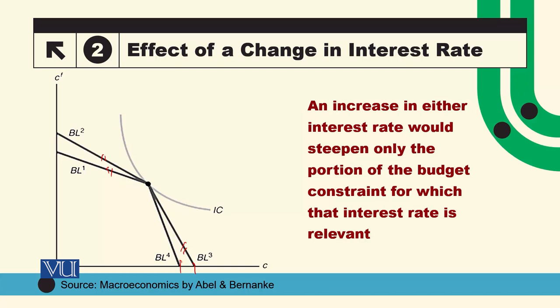دوسرا ہم یہ دیکھنا چاہتے ہیں کہ ان میں سے کوئی سا بھی rate جب change ہوتا ہے تو اس کا consumer کی choices پر کیا اثر پڑے گا — اس کی current consumption اور future consumption کس طرح effect ہوگی۔ اس میں ہم ایک particular case لے رہے ہیں جس میں indifference curve اس کے no borrowing no lending point پر hit کر رہا ہے — اگر یہ situation ہے تو whatever is the interest rate it will not affect his or her choices of current and future consumption. لیکن اگر indifference curve کسی different point پر tangent ہے تو اس سے فرق پڑے گا۔